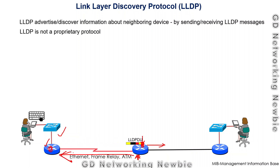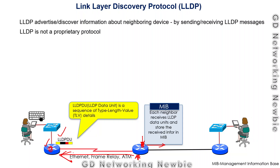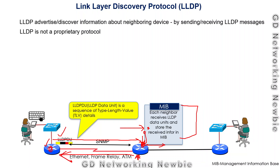In LLDP, there is a sequence of Type Length Value fields that dictate what information is being exchanged between neighboring devices. Each neighbor receives the LLDP data units and stores that information in a MIB — Management Information Base — which is a kind of database. If you want to retrieve that stored information, you use the SNMP protocol — Simple Network Management Protocol.